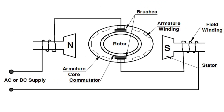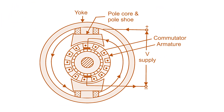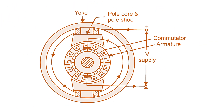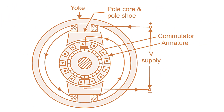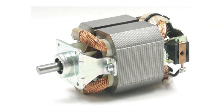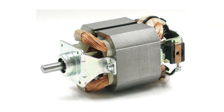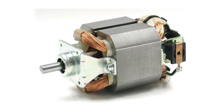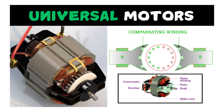However, the main disadvantages of using the universal motor are limited torque output, limited efficiency, and they can be noisy. Universal motors are mainly used for power tools, household applications, automotive systems, and more. These are the basic applications and overview of the universal motor.